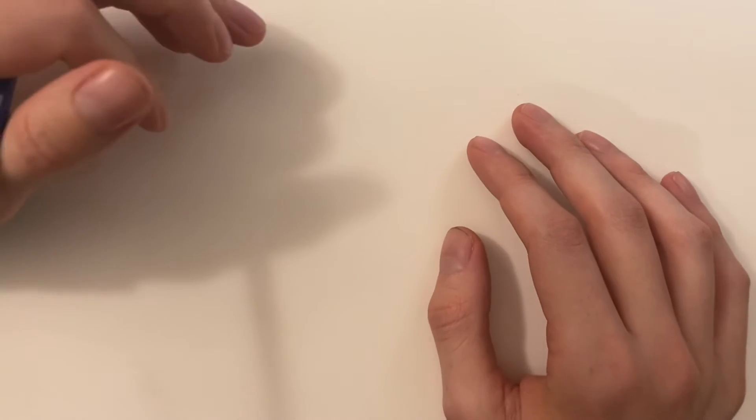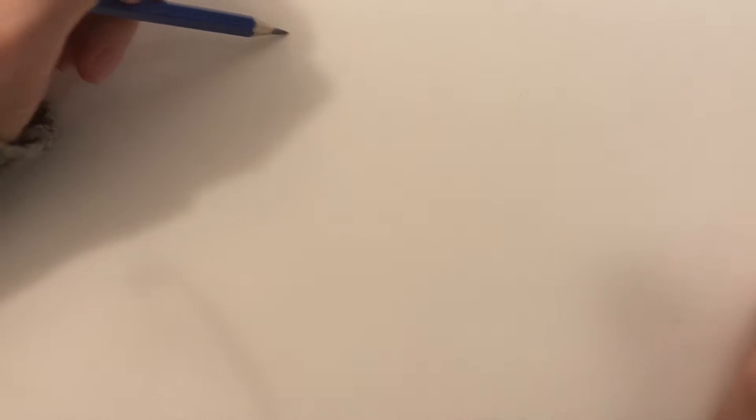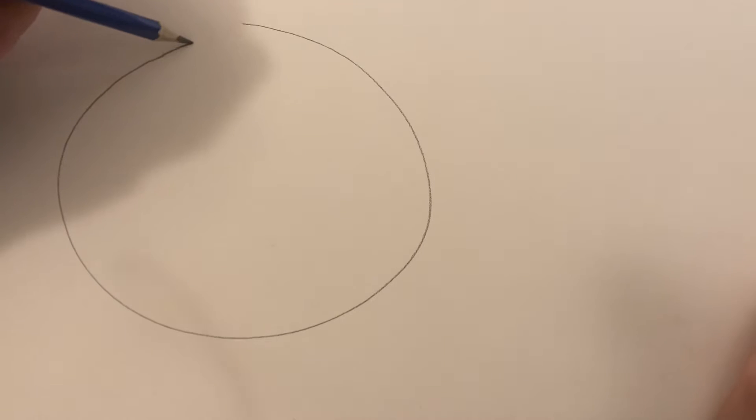So when you're drawing Mario, the first thing you got to do is put the foundation. We know that Mario kind of is round, so you want to draw a circle. So it's like this. Okay.